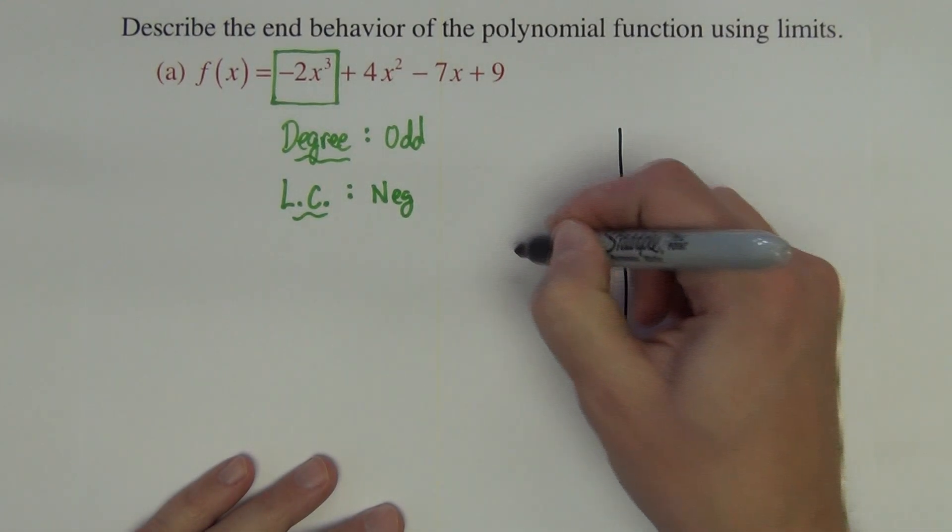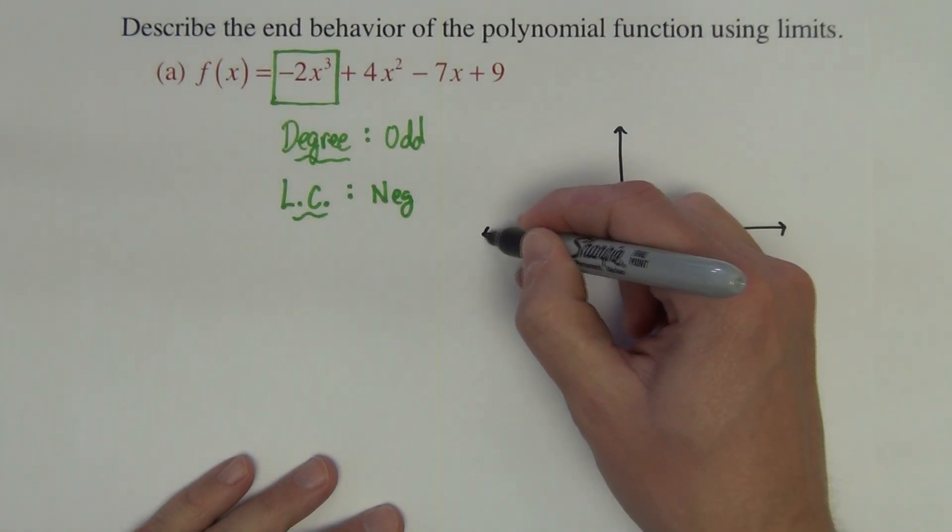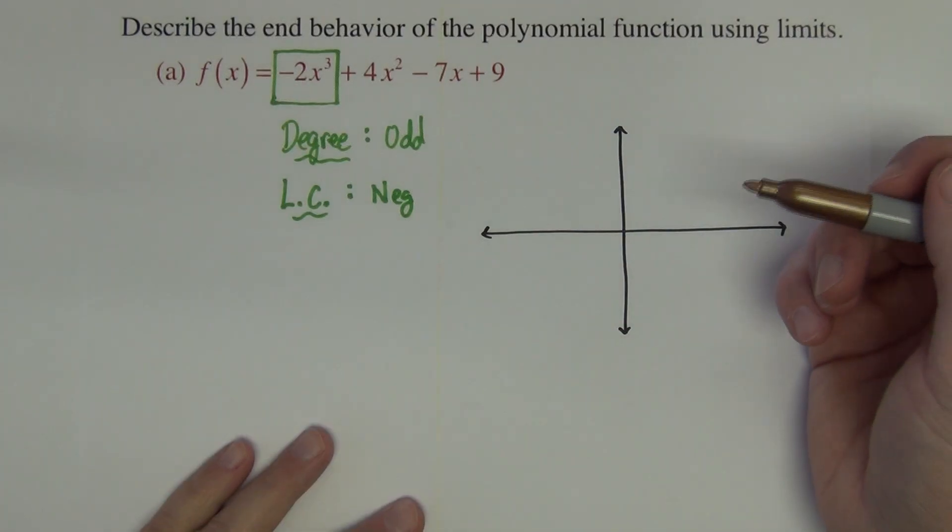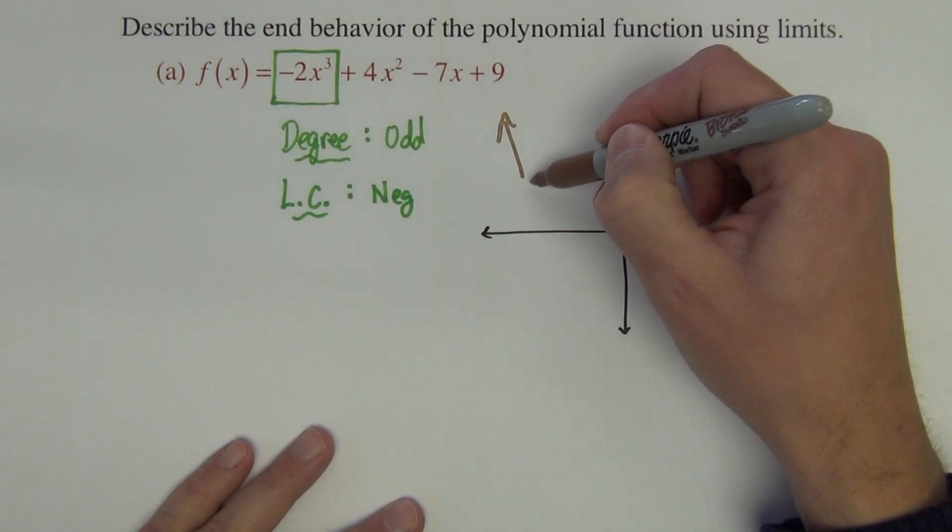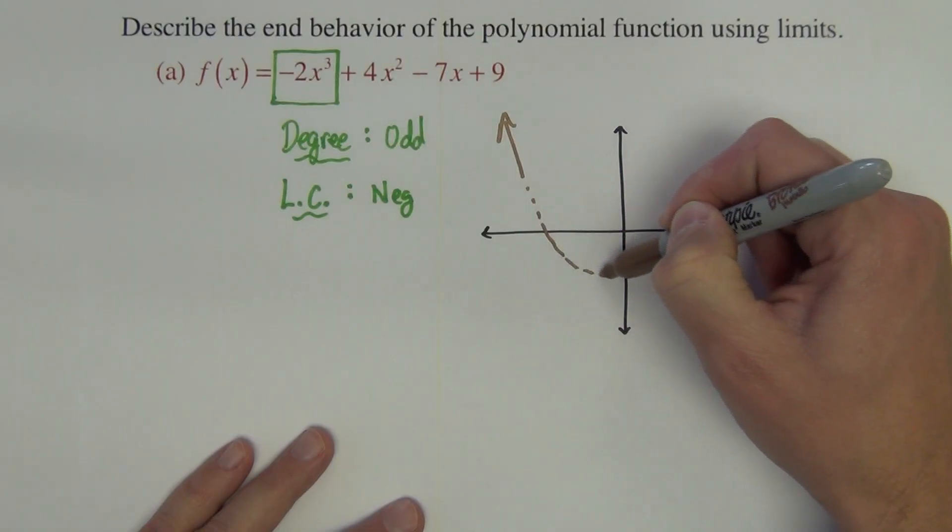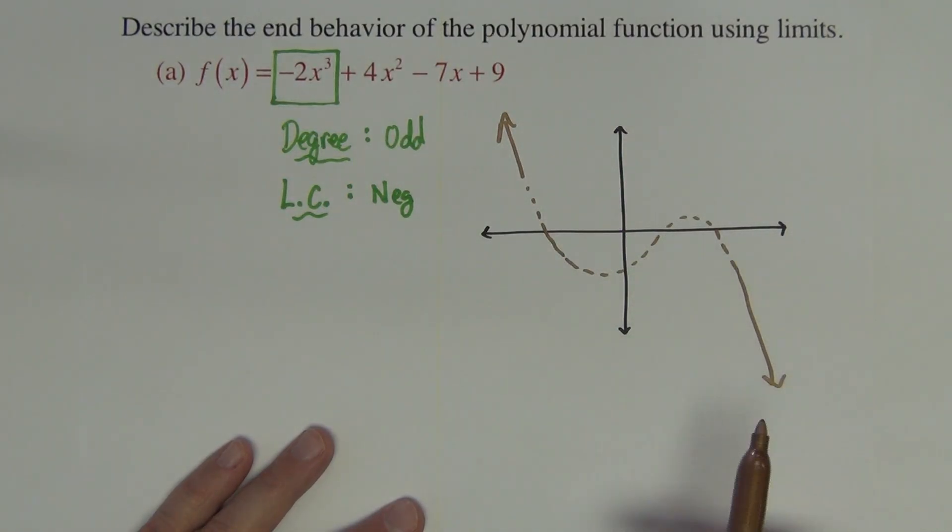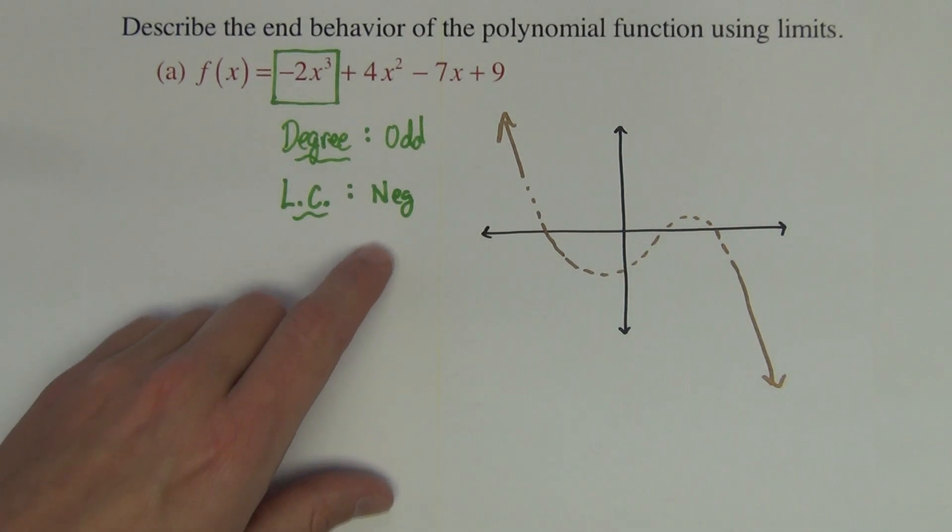So if I were to set up a graph, what does odd and negative tell me about the shape of this graph? Well, if it's odd and negative, it tells me that it's going to rise on the left and it's going to do some stuff in the middle. We don't know what exactly. And it's going to go down on the right. So that would be the end behavior for all odd and negative functions.